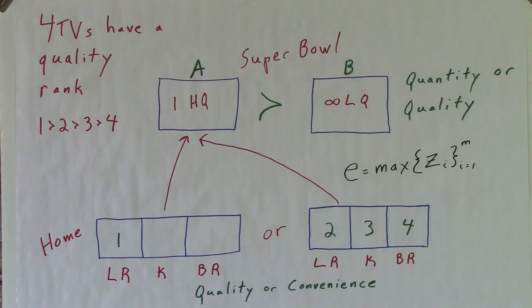Now we have four TVs with a common quality rank. People decide if they prefer TV 1 in their living room, or TVs 2, 3, and 4 spread out in the living room, kitchen, and bedroom. Some people pick TV 1, others will pick 2, 3, and 4. For the Super Bowl, everyone picks one high quality TV over an infinite number of any inferior TVs, the choice between option A or B in my first video. This is a testable theoretical prediction.